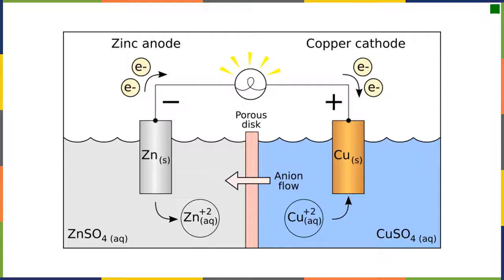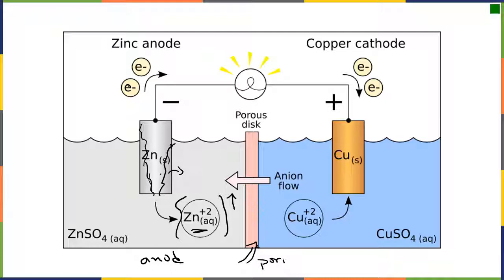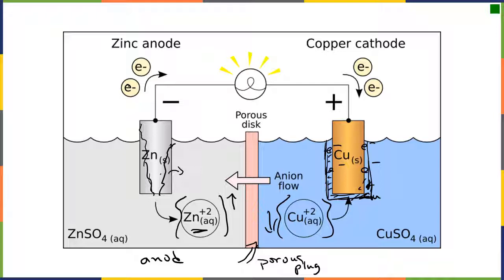In the cell diagram, the anode is zinc — zinc loses electrons, and this electrode will physically corrode. It will reduce in size as solid zinc comes off, making more zinc 2+, so the concentration of zinc 2+ goes up. The salt bridge can also be designated as a porous disc or porous plug. Electrons build up on the copper electrode. Copper 2+ comes along and picks up electrons, actually making a layer of copper — electroplating builds up a layer of copper here, and the concentration of copper 2+ goes down. This reaction will be spontaneous with a potential of 1.10 volts.